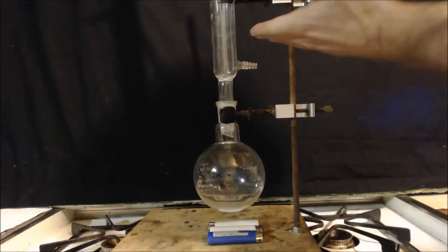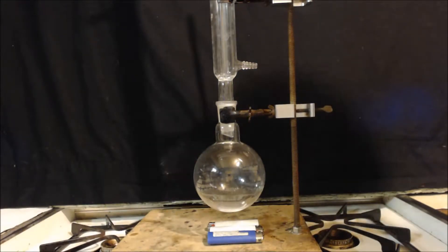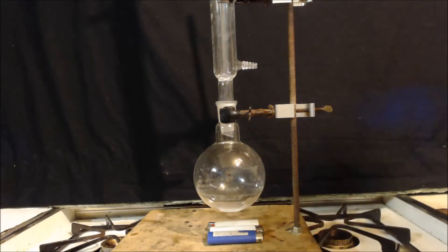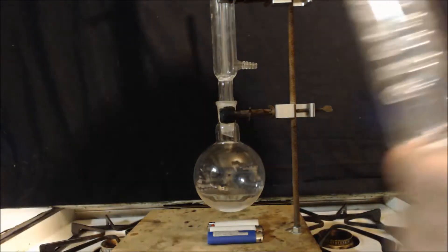Now for reflux you can use this type, I think it's called a Liebig condenser. But they do have a better one and it's actually made for refluxing where it has a coil inside.